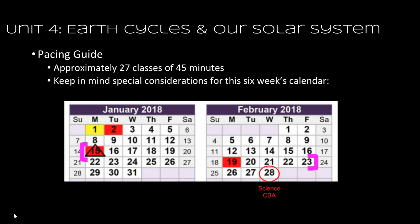I'd like to start by looking at the calendar for the district for this upcoming six weeks. It starts on January 16th and then ends on February 23rd. We do have two student holidays in there, and just a heads up, the Science CDA is scheduled to be at the end of February, the week after the six weeks.